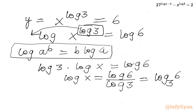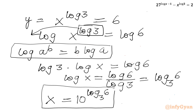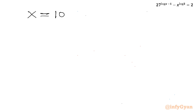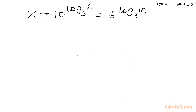From log x equals log base 3 of 6, we get x equals 10^(log base 3 of 6). Using exponent and log properties, this can also be written as 6^(log 10 base 3), or equivalently 6^(1 over log 3). So we have three different equivalent forms of our answer.